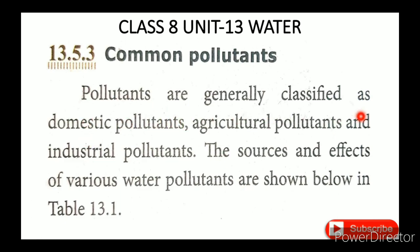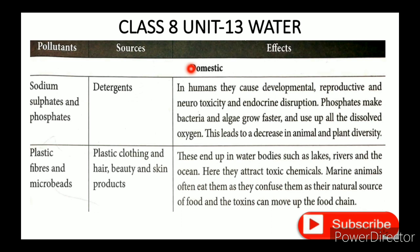Domestic pollutants include detergents. Agricultural pollutants and Industrial pollutants are the other two categories. The sources and effects of various water pollutants are given in the table below. For domestic pollutants, the pollutant name is Sodium Sulfate and Sodium Phosphate — these are found in detergents and soaps used by humans.